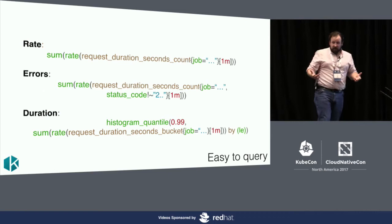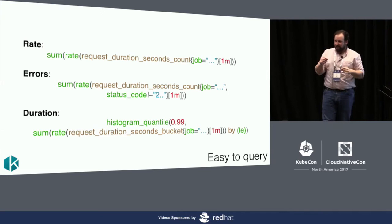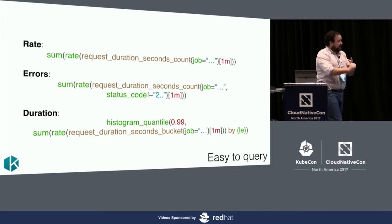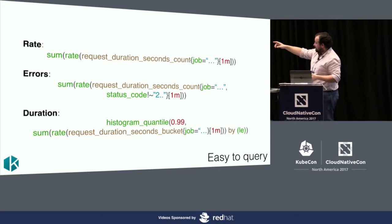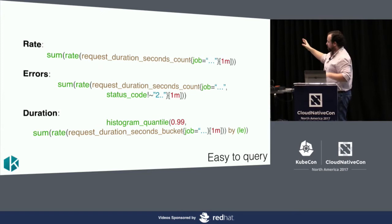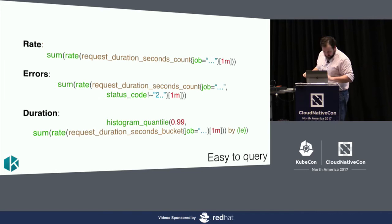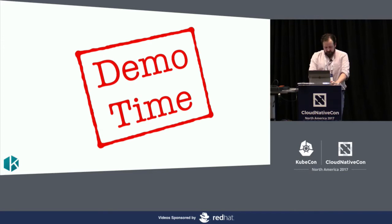To get the rate of requests is super easy — you just look at the request duration seconds count. This is an internal implementation detail of how histograms work in Prometheus: they export multiple time series — a count, a sum, and buckets. We use the count to see how many requests are going. Then we do a count filtered by status code not equal to 200 to get error requests. And we use histogram quantile with a complicated expression to get the latency distribution.